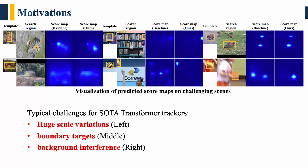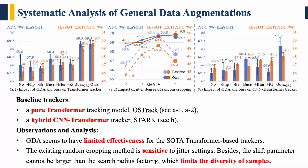In terms of these challenges faced by transformer trackers, we propose two data augmentation methods to improve trackers. Here are the overall results and some observations of our systematic experiments. We chose two different baseline trackers: a pure-transformer tracker OSTrack and a hybrid CNN-transformer tracker STARK.